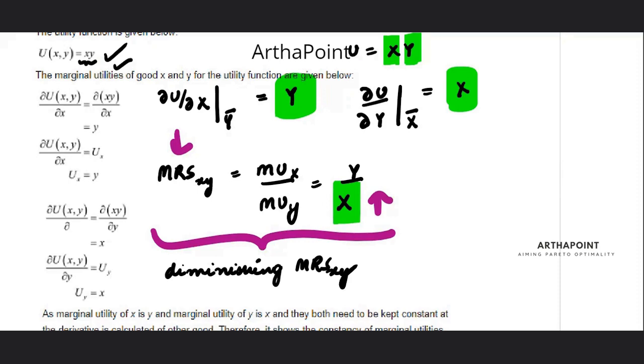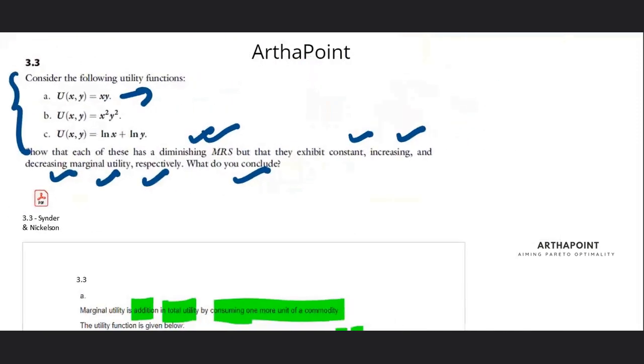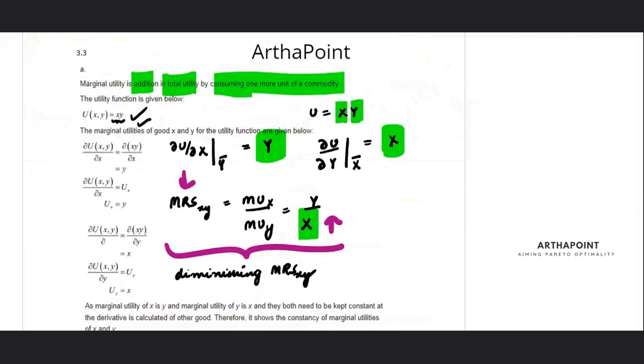So now the question is asking whether it is increasing, decreasing, or constant marginal utility. Now, how do I check if marginal utilities are increasing or decreasing? Well, the marginal utility of X is Y. Whether it is increasing, decreasing, or constant can easily be checked by understanding how this marginal utility changes as X changes.